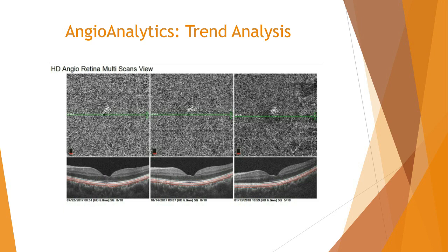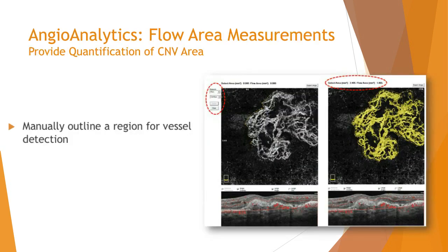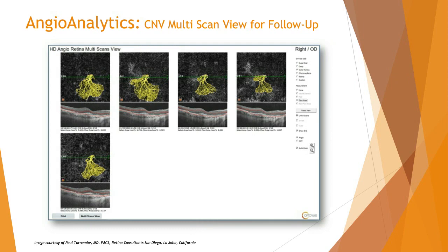One of the beautiful features of the OptiView AngioView is the AngioAnalytics program — a true game changer in OCTA interpretation. The first feature is trend analysis. In this patient, we monitored the lesion over almost two years, and the lesion stayed almost identical in size across three visits. But if you want a quantitative evaluation, OptiView has a flow area measurement tool. You can outline the region in question with your mouse to get a quantitative analysis of not only the area of the CNV but the flow area as well, allowing you to monitor the size and flow of the lesion over time.